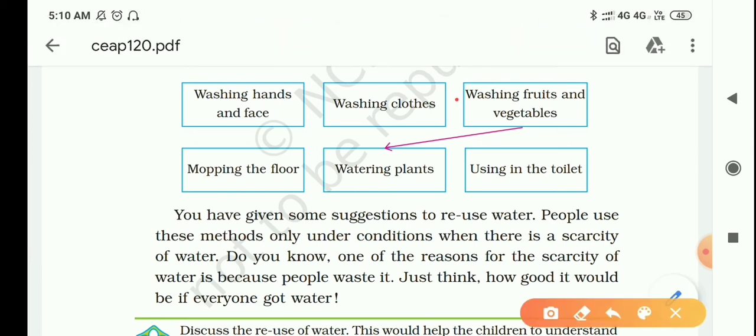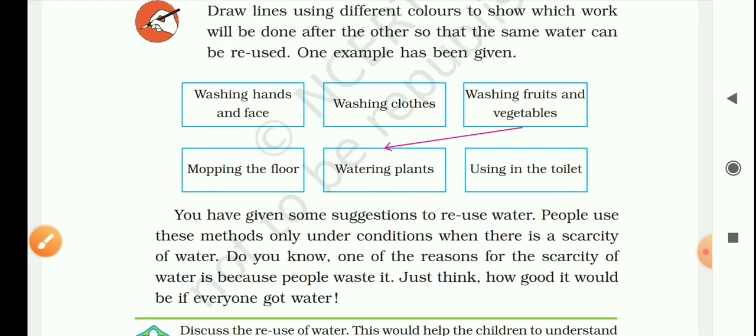Washing fruits and vegetables, and it is connected to watering plants. Means the water left after washing fruits and vegetables can be reused for watering the plants in the garden.